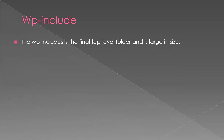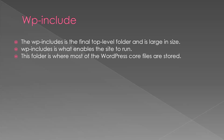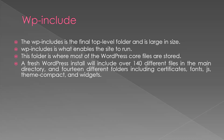The next folder is WP includes, which is the final top-level folder and is large inside. WP includes is what enables the site to run — it is where most of the WordPress core functions are stored. A fresh WordPress install will include over 140 different files in the main directory and 14 different folders, including certificates, fonts, JS (JavaScript files), theme compat, and widgets.